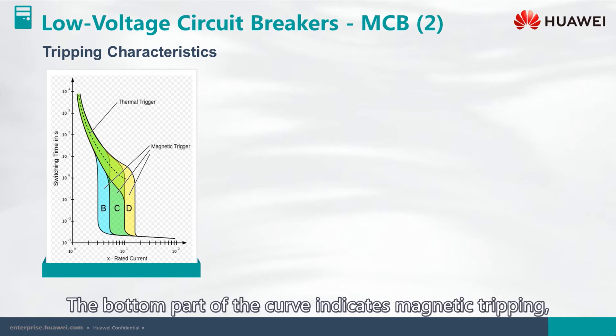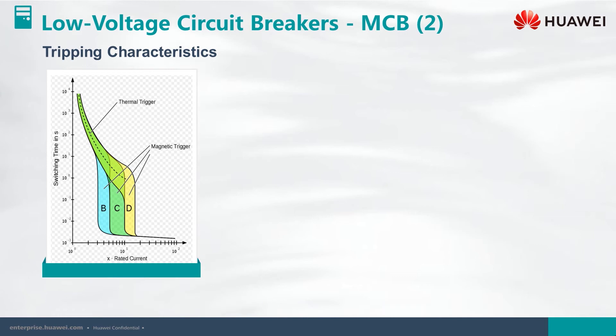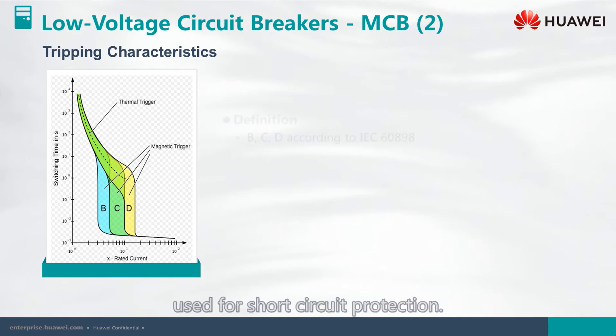The bottom part of the curve indicates magnetic tripping, used for short circuit protection.